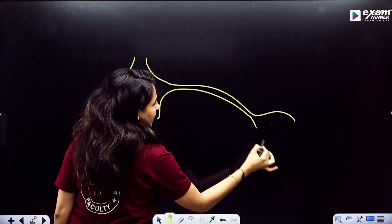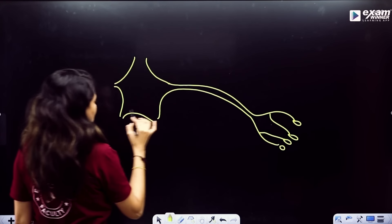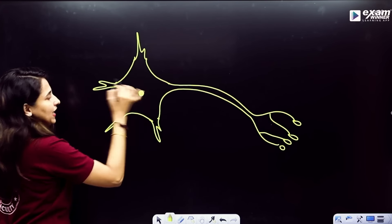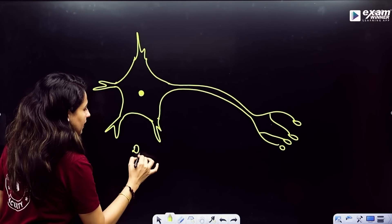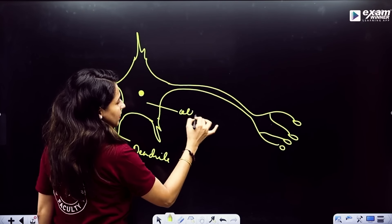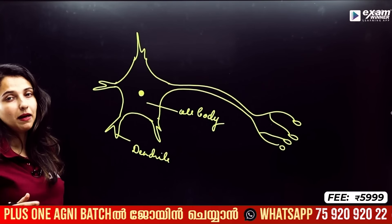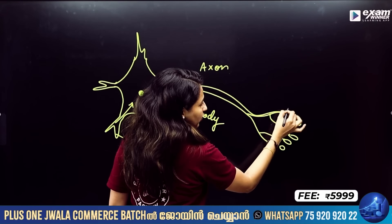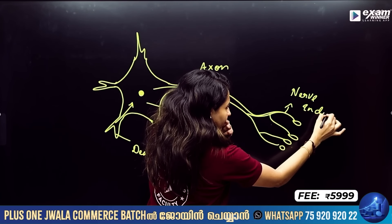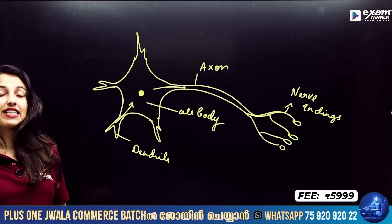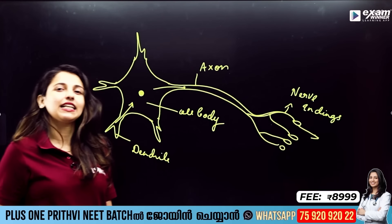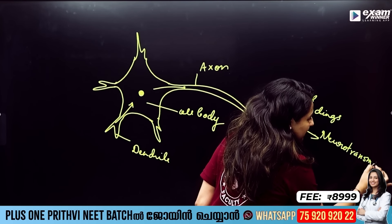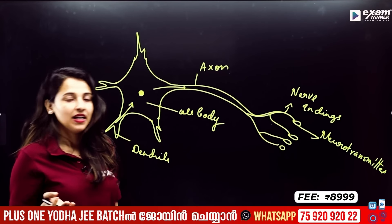The neuron has dendrites, axon, and nerve endings. The dendrite receives impulses and passes them to the cell body. The axon carries impulses away from the cell body to nerve endings. The nerve endings have a bulb structure. Electrical impulses are converted to chemical impulses by secreting certain chemical substances called neurotransmitters.